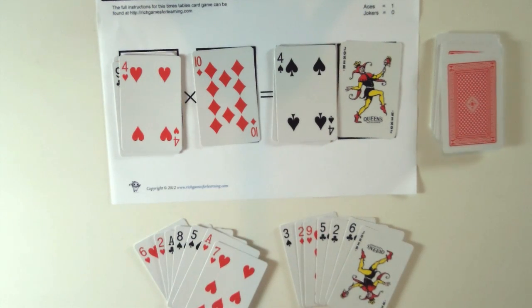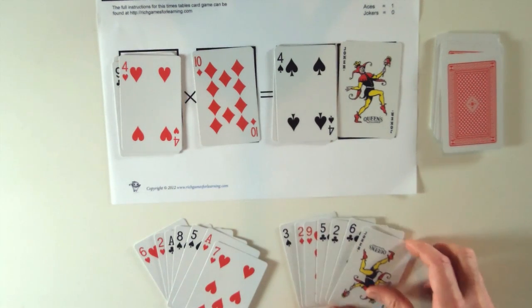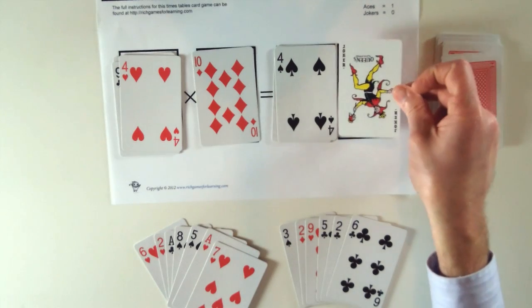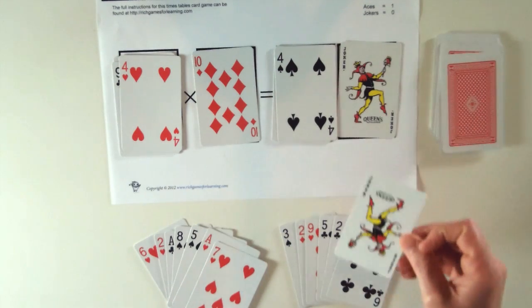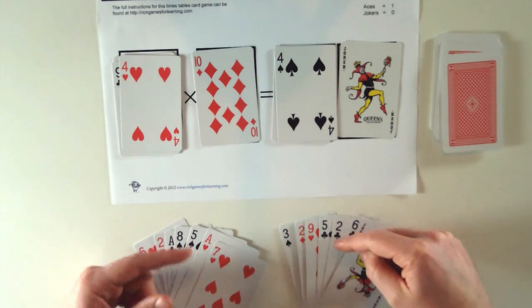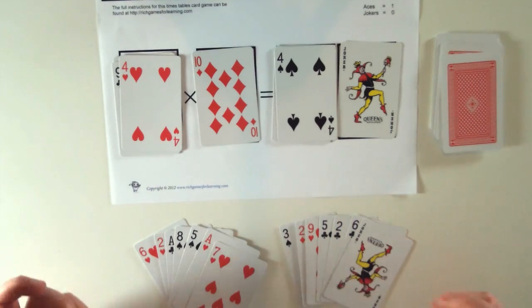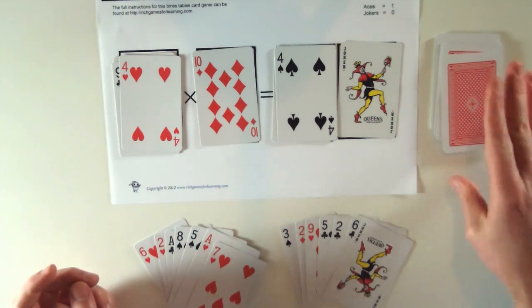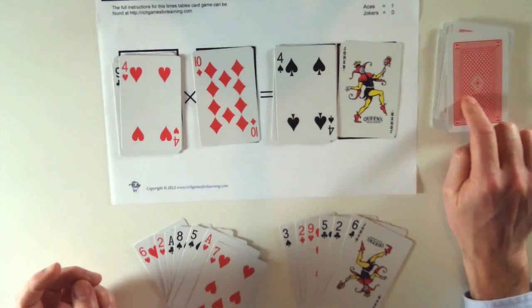Now a player isn't allowed to put the same card on top of another card. So this player wouldn't be allowed to put the joker on top of a joker. And each player keeps putting cards down to make new times table sums until they've used up all these cards.